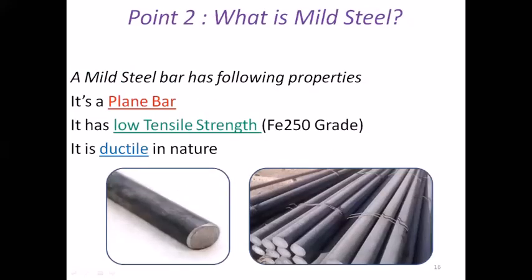Second, what is mild steel? In our construction, instead of plates or other sections, we use steel bars. You might have seen this plane type of bars. It has some properties: it is a plane bar. Secondly, it has low tensile strength, that is Fe 250 grade. This Fe stands for iron and 250 is its tensile strength. 250 Newton per mm square is the tensile strength of mild steel bar. Therefore, for grading point of view, it is denoted by Fe 250. And last one is, it is ductile in nature.